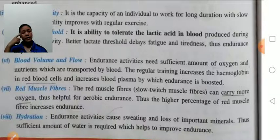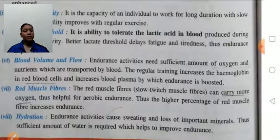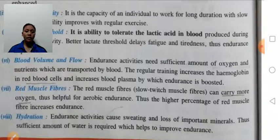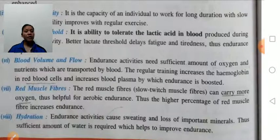Blood volume and flow: endurance needs a sufficient amount of oxygen and nutrients, which are transported by the blood. Regular training increases hemoglobin in the red blood cells and increases blood plasma, by which endurance is boosted. Red muscle fibers — slow twitch muscle fibers — carry more oxygen and help for endurance activity. The higher the percentage of red muscle fibers, the higher will be the endurance.